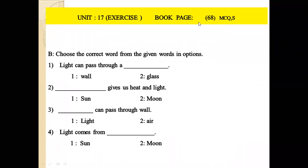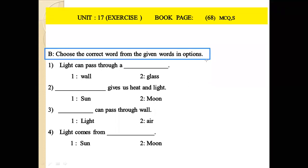Exercise B, book page number 68, MCQ. Choose the correct word from the given options. Number 1: Light can pass through a blank — option: wall or glass. Answer: light can pass through glass. Light cannot pass through a wall.